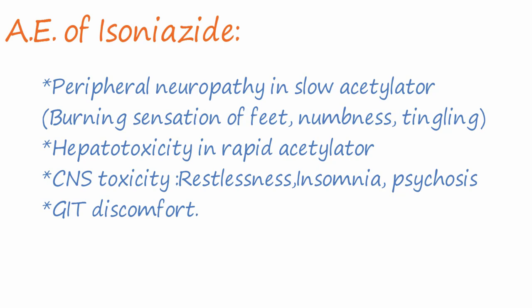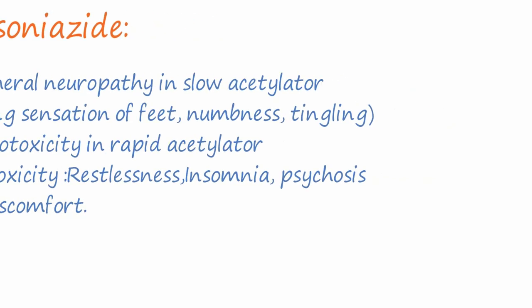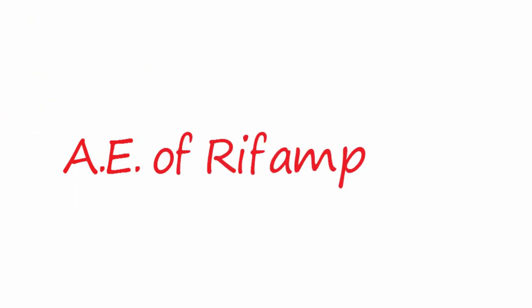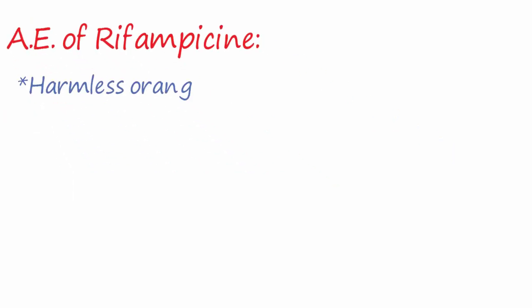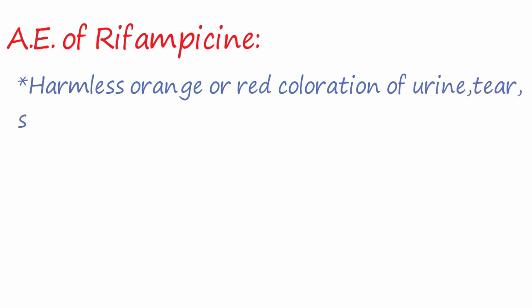Isoniazid also causes central nervous system toxicity: restlessness, insomnia, and psychosis, as well as GIT discomfort. Now, the adverse effects of rifampicin include harmless orange or red coloration of urine, tears, and saliva, which can stain contact lenses.